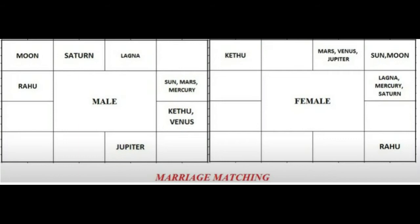Now the eighth rule. Up to seven rules we have checked planet-to-planet comparison by comparing both the male and female charts. The other three rules we will see separately from the male chart and female chart. In the boy's chart we have to see the second house, fourth house, and tenth house. The second house represents family, the fourth house is sukhasthana (comfort), and the tenth house is respect and honor.